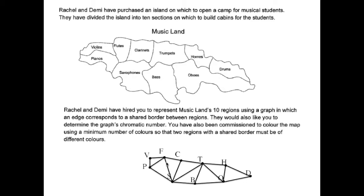F has four vertices going into it. S has five. T has five as well — T and S both have five. So you can start with T or you can start with S. I started with T. It doesn't matter what you pick. And I'm starting with yellow. That means all the adjacent ones — the ones that are beside the T — I'm going to try and color them one color.